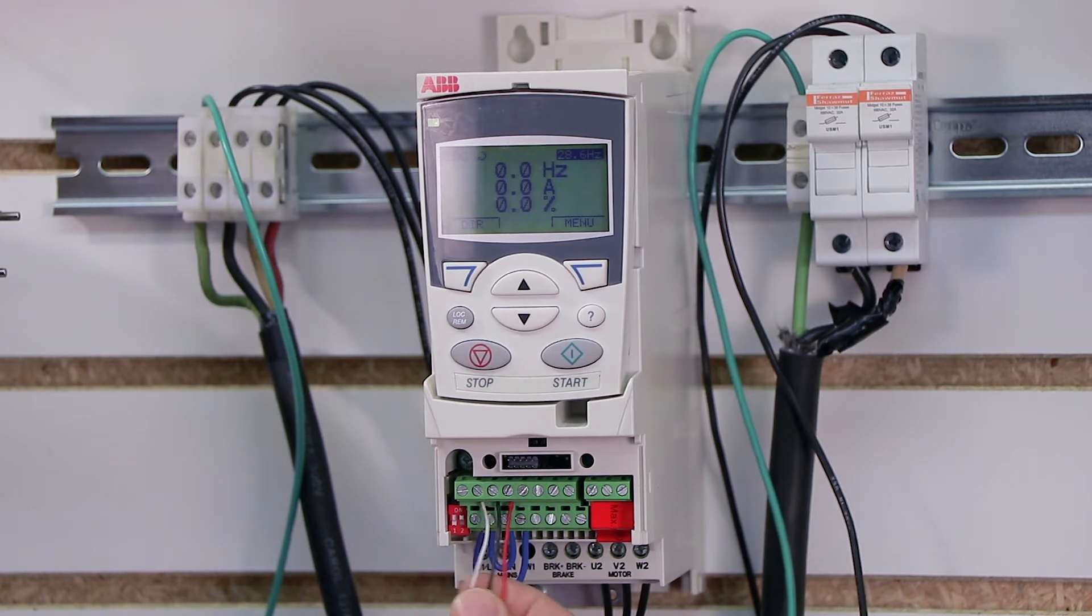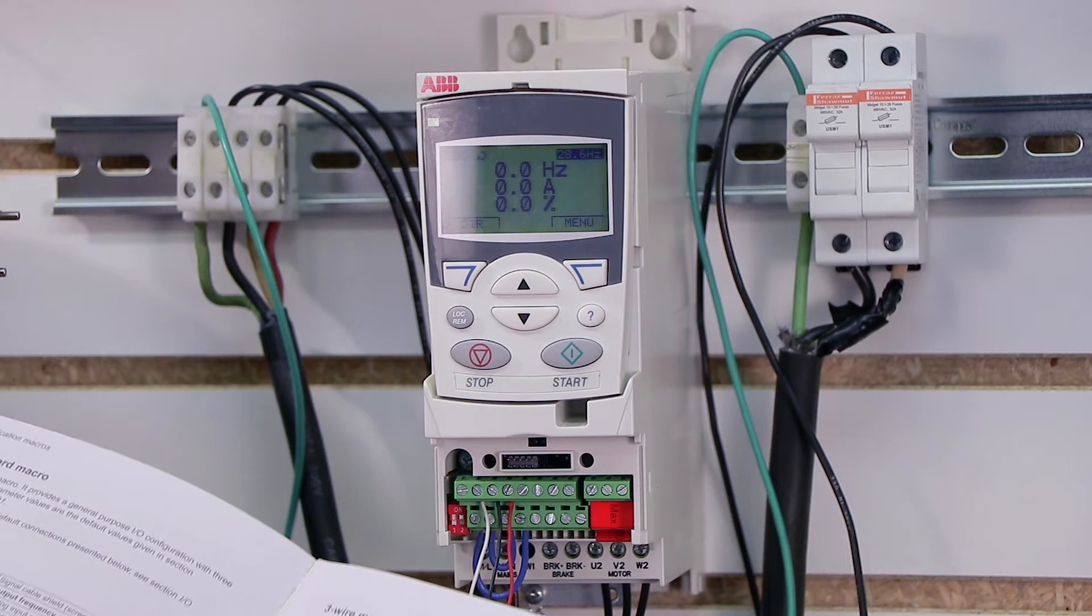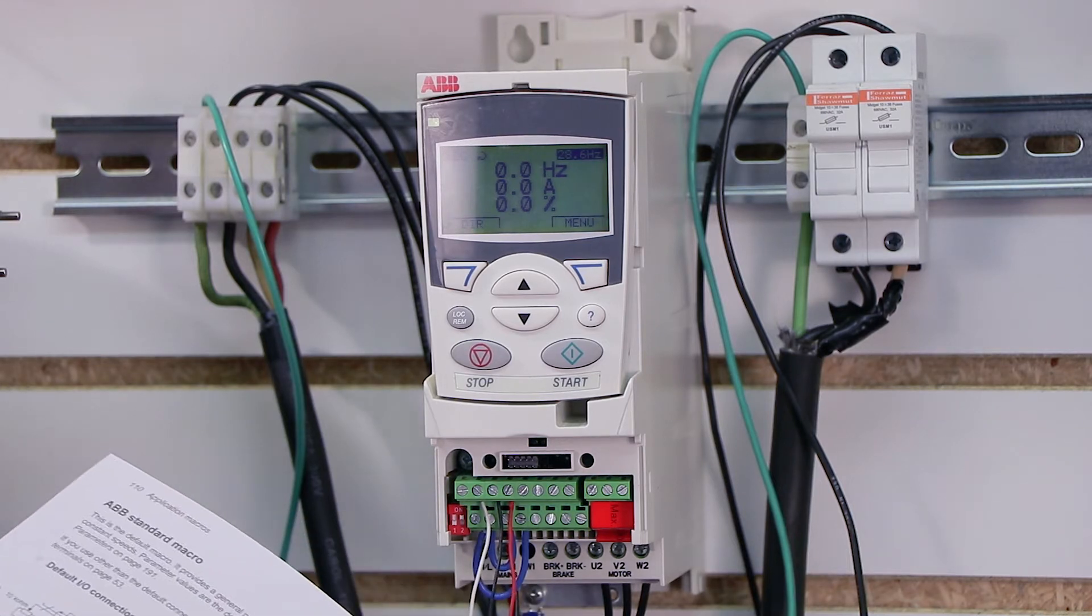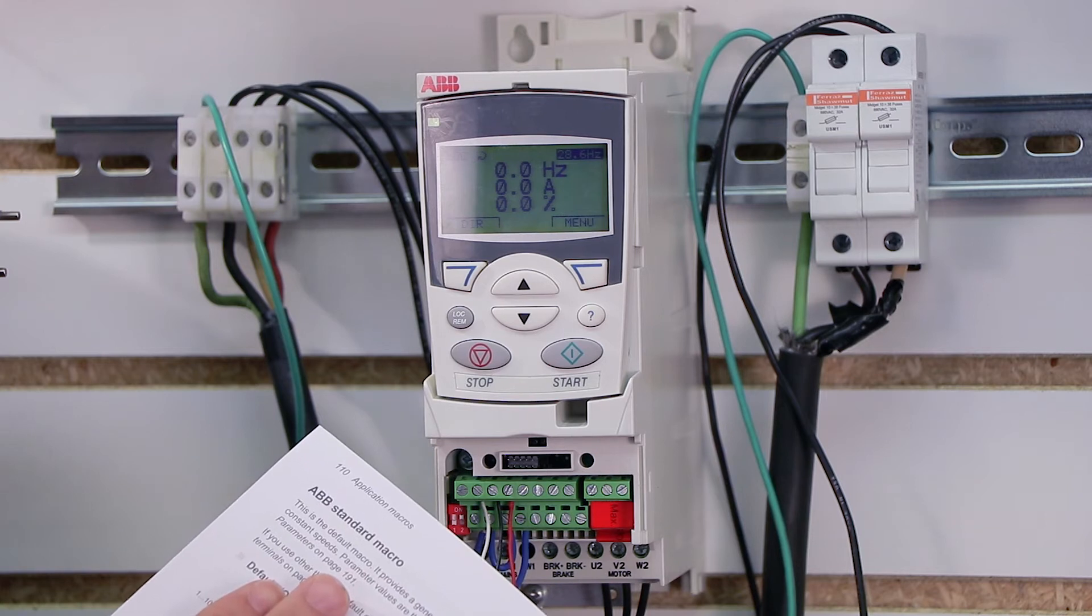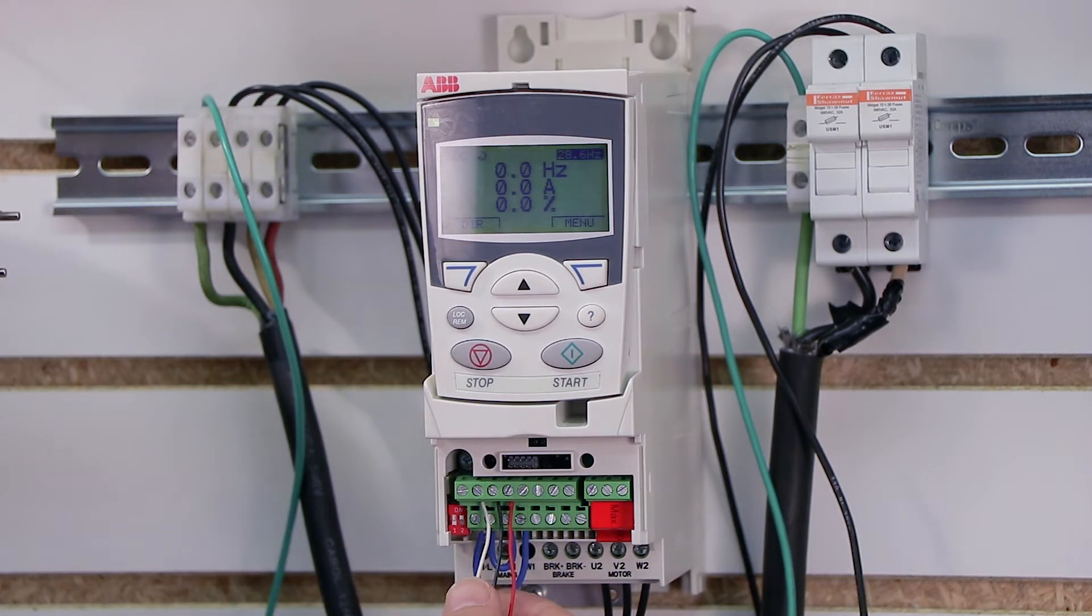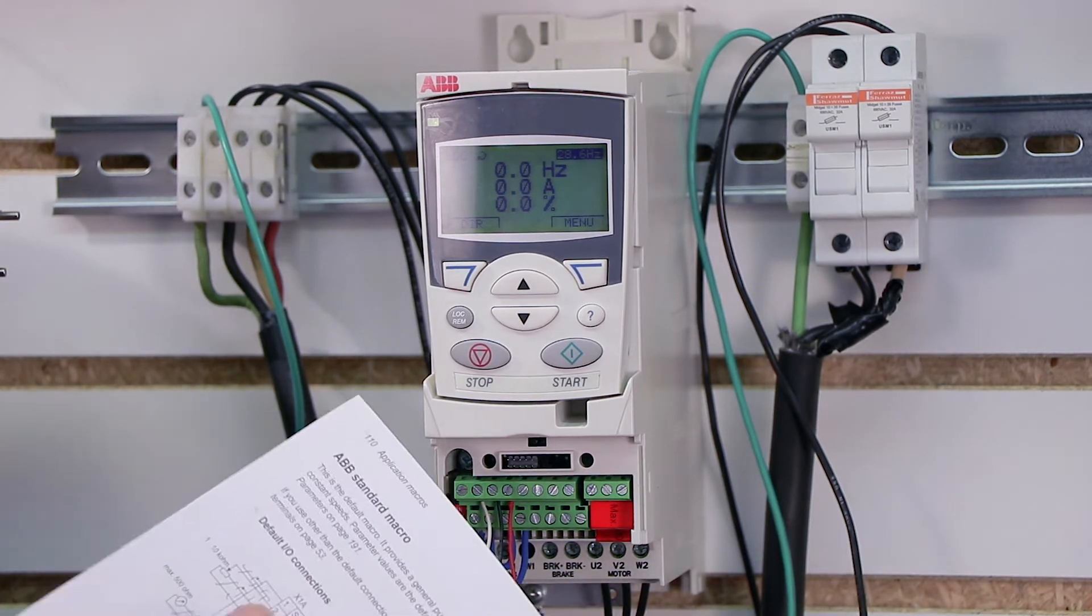Now in the previous video we went over macro, and in the previous video we set up our drive for the ABB standard macro. Now depending on your actual setup, the wiring should be the same for your analog input here, so no matter how you programmed it, you can wire your analog reference the same regardless of the programming.